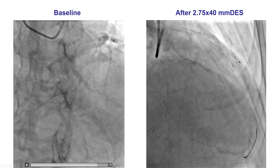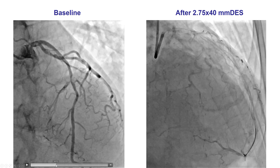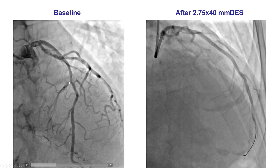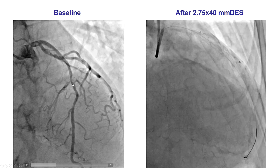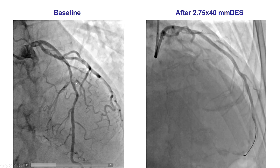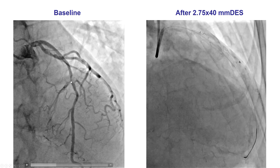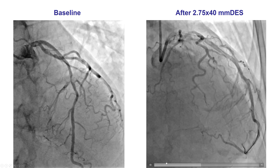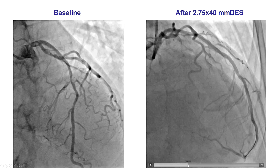This is the image before, showing that there is a septal branch that originates within the lesion. The septal is originating immediately proximal to the takeoff of this diagonal branch. In the picture taken after the stent, here is the diagonal branch and we see that the septal is missing.